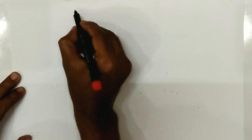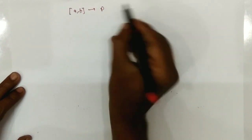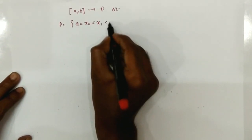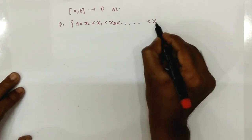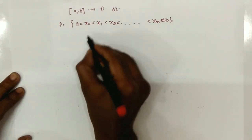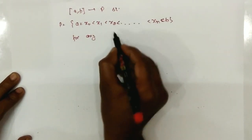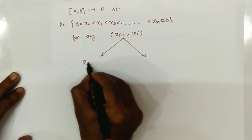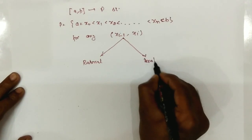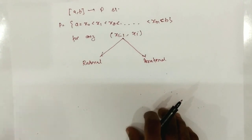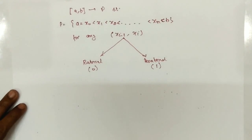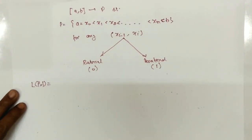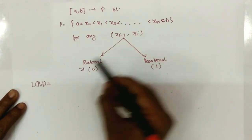We will split the interval [a, b] into a partition P such that this is the partition of the closed interval [a, b]. Now for any subinterval it contains some rational number and some irrational number. For a rational number we have function value 0 and for an irrational number we have function value 1. We are interested in finding the lower Riemann sum (LPF). For LPF we need to find small m_i, which is the infimum, and the infimum in each interval is 0 since it contains some rational point.